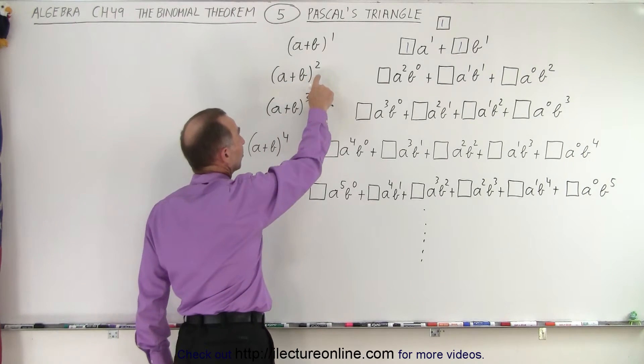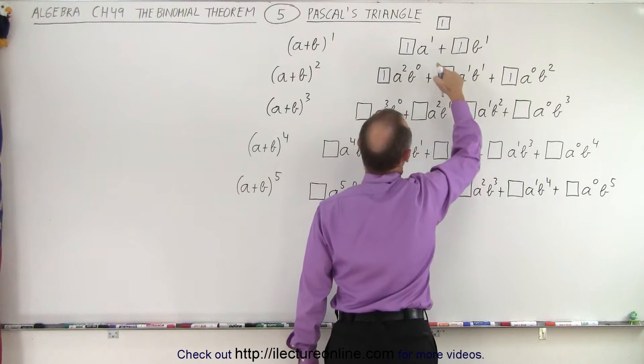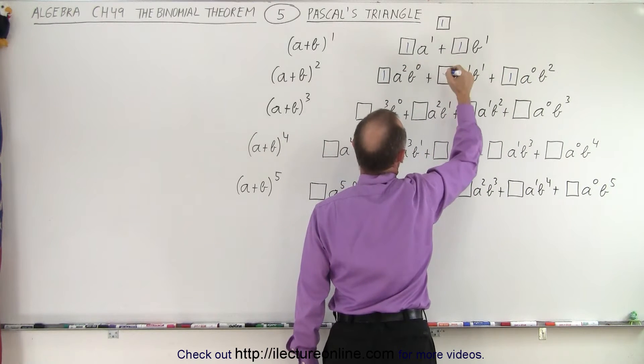But then when we get to a plus b to the second power, notice that the 1s move to the side, and then the 1 in the middle is simply the sum of those two, 1 plus 1, and we get 2.